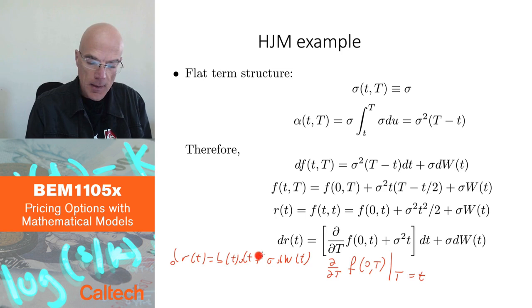Here, using the Heath-Jarrow-Morton approach, we get exactly what b(t) has to look like in terms of the data that you see. It has to be this, it has to be the derivative of the observed current forward rate, plus sigma squared t. That's what b(t) has to be. And then, if you choose it like this, at time zero, your model will be perfectly calibrated to the bond data.